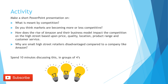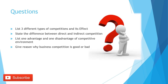Do whatever suits you best. Question time — I'd like you to answer these questions in the comment section below, as they may come up in your exam. List three different types of competition and their effects. State the difference between direct and indirect competition. List one advantage and one disadvantage of the competitive environment. Give a reason why business competition is good or bad. Make sure you comment below, and also like, share, and subscribe to this channel. Thank you for joining me in this lesson and I will see you in the next video. Take care for now.